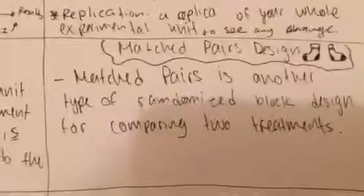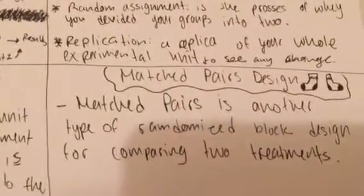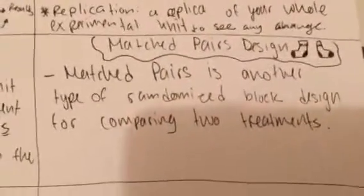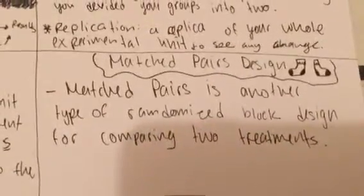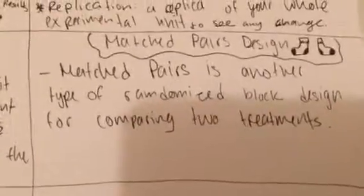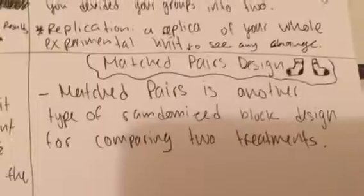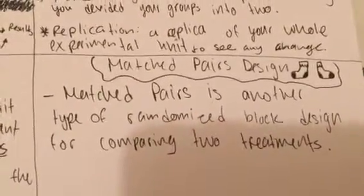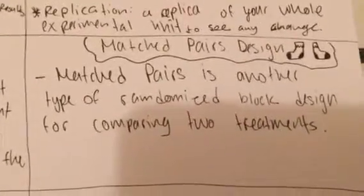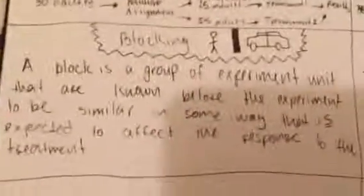Then we have matched pair design. Matched pair design is another type of randomized block design for comparing two treatments. Basically, you're comparing the treatment you have to the other treatment and seeing if they have any effect on each other, basing your whole experiment on that. This is just another way of conducting an experiment — which could be matched pairs or blocking. That's pretty much all for planning and conducting an experiment.